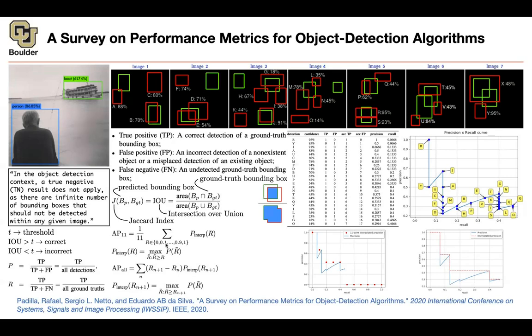This is for one class. If you want to report a number for all classes — say 21 classes in Pascal VOC — just average them: that gives you Mean Average Precision (mAP) for the algorithm, and now you have a metric to compare algorithms. Why not just find the area under the curve without approximating? The problem is you want precision to be a monotonically decreasing function. If it goes up, it's not clear whether you should subtract or add that region — so that's why you want it to be monotonic.